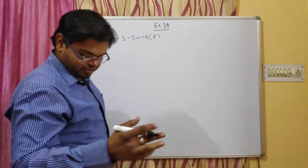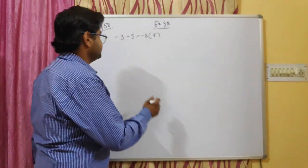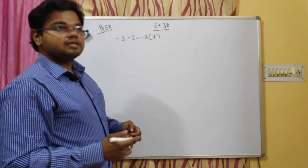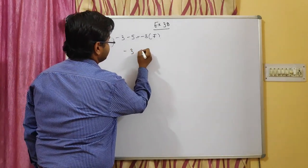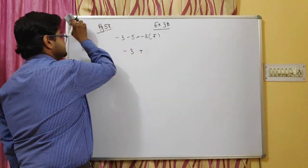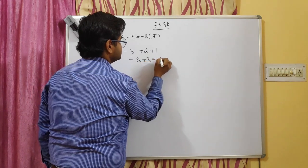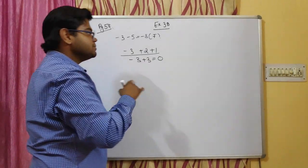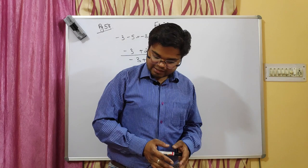Statement two: the sum of three different integers can never be zero. Let's check — take minus three, plus two, plus one. Minus three plus two plus one equals zero. So here we have three different integers — minus three, two, and one — and their sum is zero. So the second statement is also false.